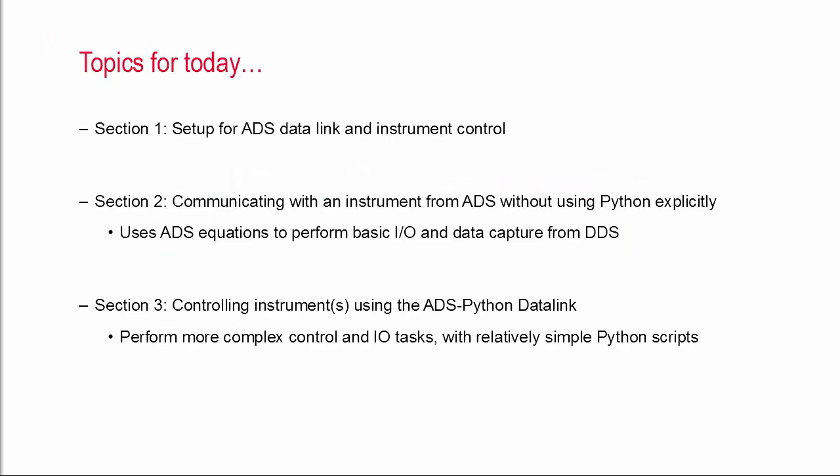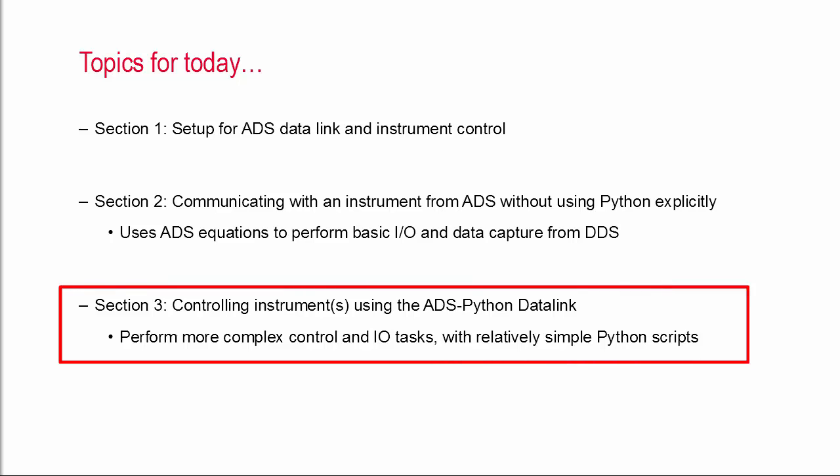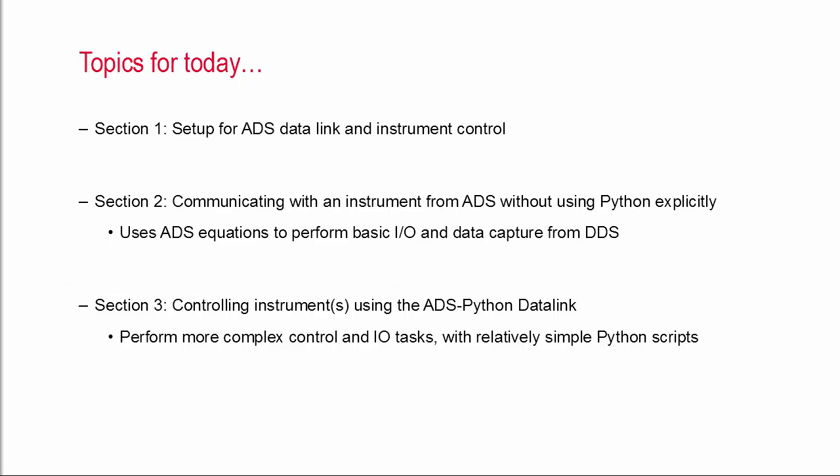This video will be divided into three sections. The first section is setup. The second section will describe how you can send SCPI commands to capture instrument data into ADS without using Python explicitly, so everything will be simple equations based on standard instrument SCPI commands. And in the third section, I'll show you how to control instruments using the ADS Python data link. Using this approach, you can run a much more sophisticated Python script to do custom or difficult measurements, and you can even control multiple instruments simultaneously to get the data that you need.